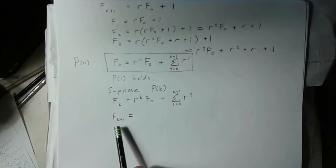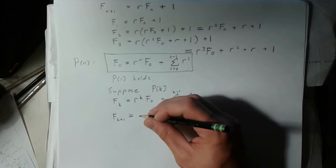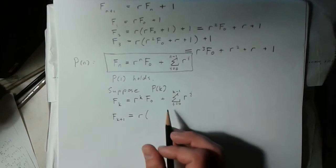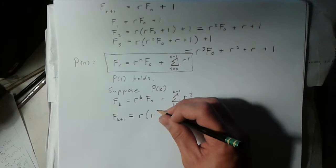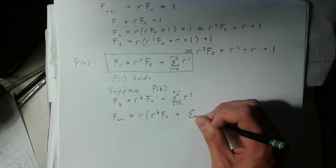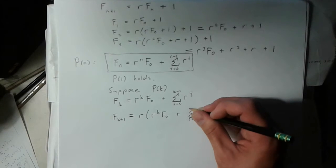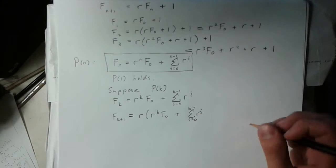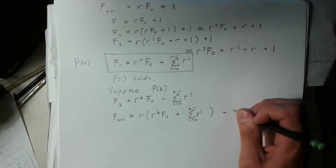So I see that fk plus 1, that would just be r times the kth term, which is this, plus 1. So the kth term is r to the k f0 plus the sum from 0 to k minus 1 of r to the i plus 1.